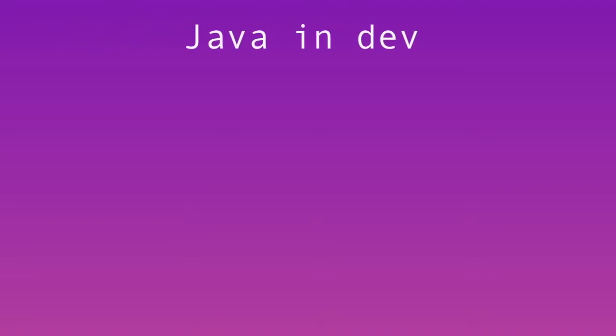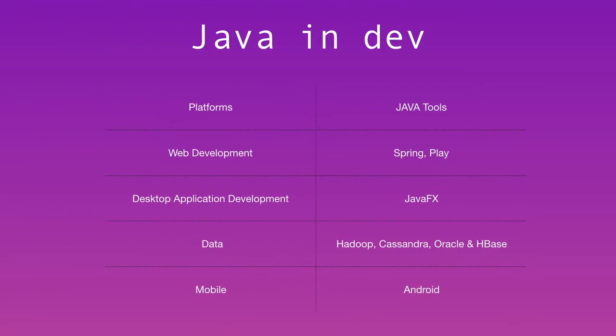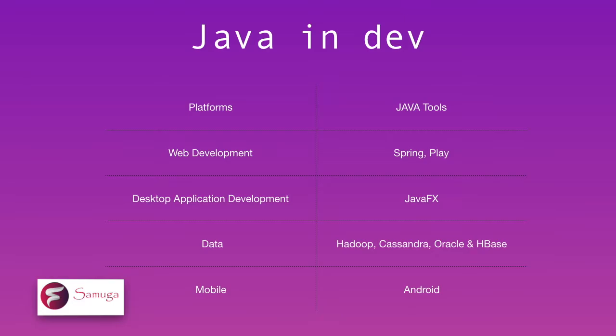Let's look at Java in development areas. There are a lot of platforms where Java can be used: web development, desktop application development, mobile development, and back-end like databases. In web development, Java uses two popular frameworks — Spring and Play.